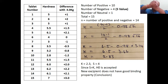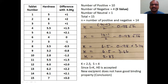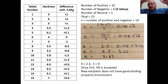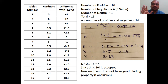Now compare K and S: K = 2.83 and S = 4. Since S is greater than K, H0 is accepted. Conclusion: the new excipient does not have good binding property — it is a waste. The fact that some tablets scored below 4 kg and one was neutral shows the polymer needs to be modified.